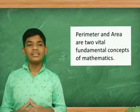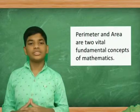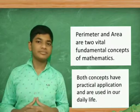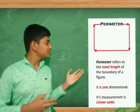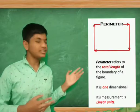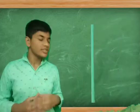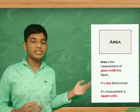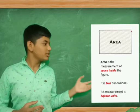Perimeter and area are two vital fundamental concepts of mathematics. Both concepts are used in our daily life. Perimeter refers to the total length of the boundaries of a figure. It is one dimensional, measured in units. Area is the measurement of space inside the figure. It is two dimensional and its measurement is square units.